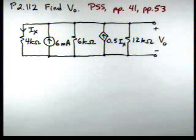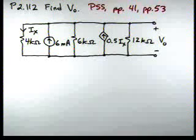Okay, here's the problem-solving video for problem 2.112. It says find V0. If we look at our circuit there, we'll note that we have a single-node pair circuit. Got a node at the top, a node at the bottom. All those elements are connected in parallel.